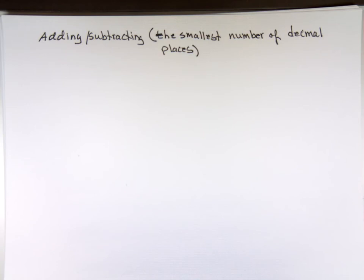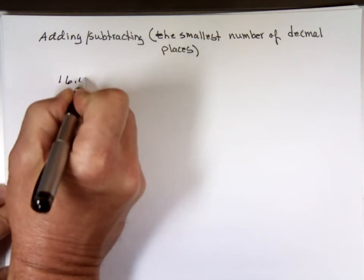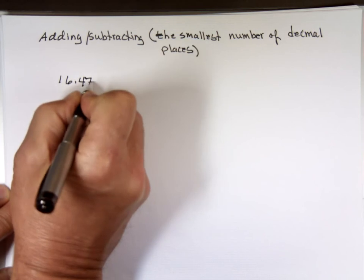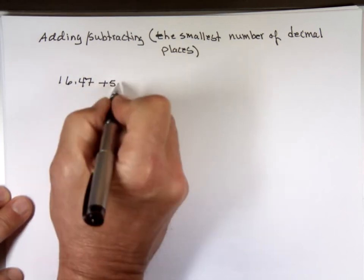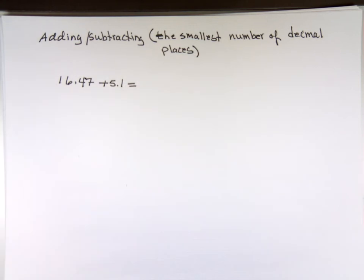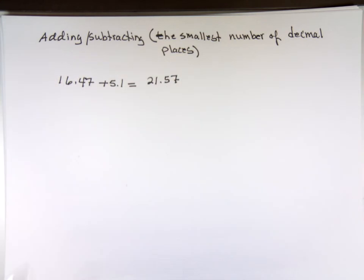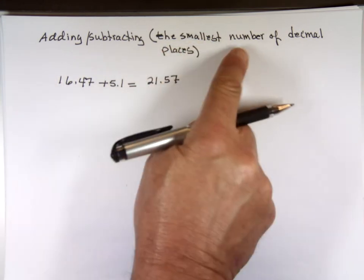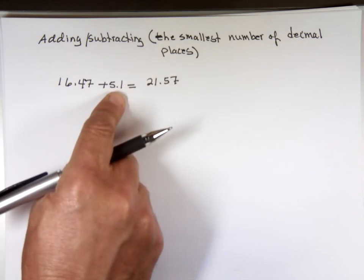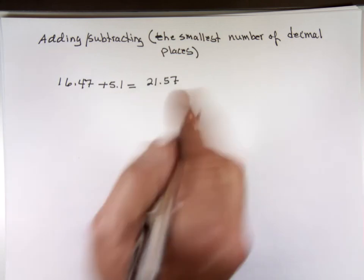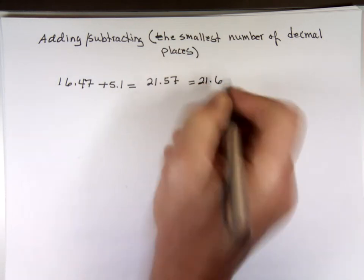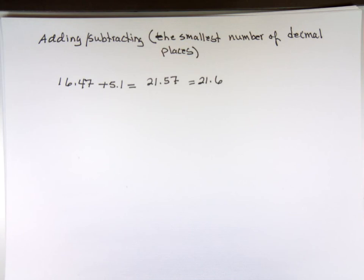Let's take an example. Let's say I want to add 16.447 plus 5.1. The math says it's 21.57. But for addition and subtraction, we use the smallest number of decimal places. 5.1 has one decimal place, 16.447 has three. So we use one decimal place — my answer should be 21.6.